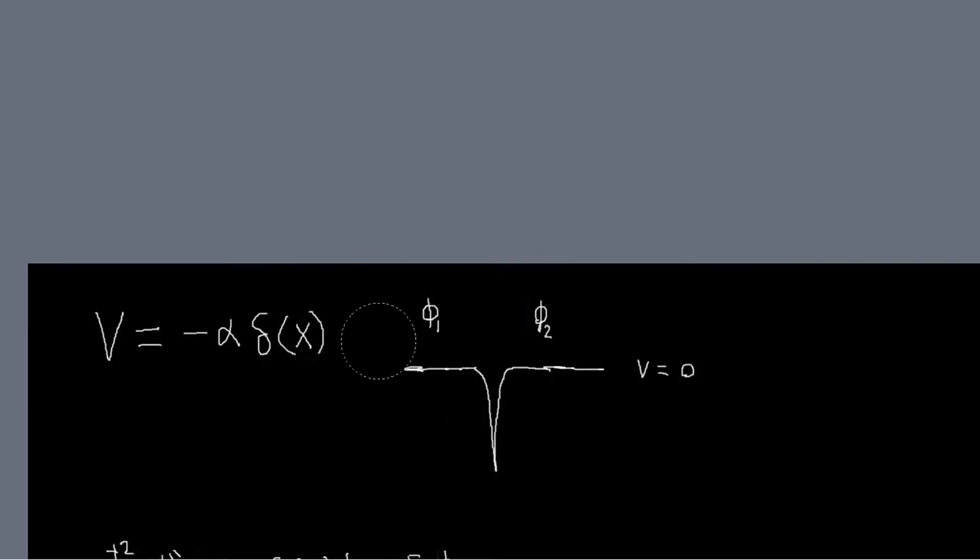So the Dirac delta function, it's zero everywhere except at a point, and delta of x is zero everywhere except at zero, where it goes to infinity. So our potential basically is zero, and then it jumps to minus infinity, and then it's zero again. So it's a very weird kind of potential, and that will have implications for us later on.